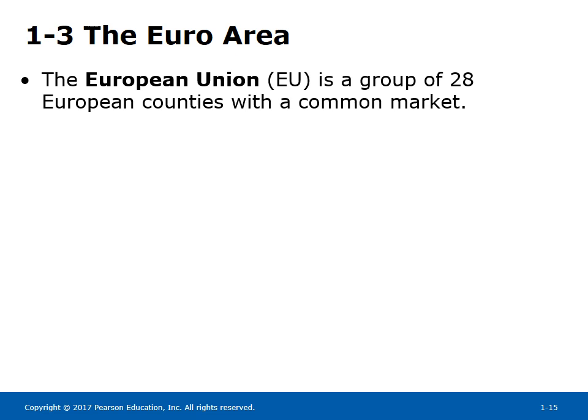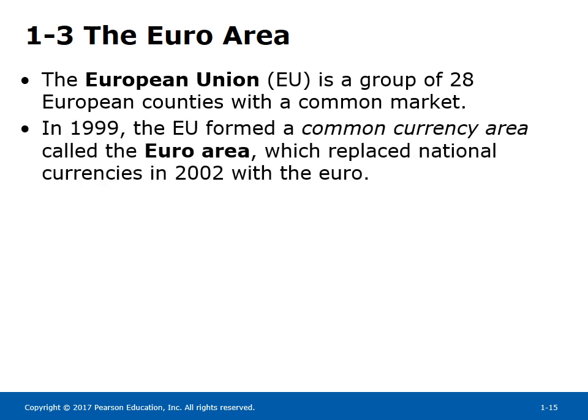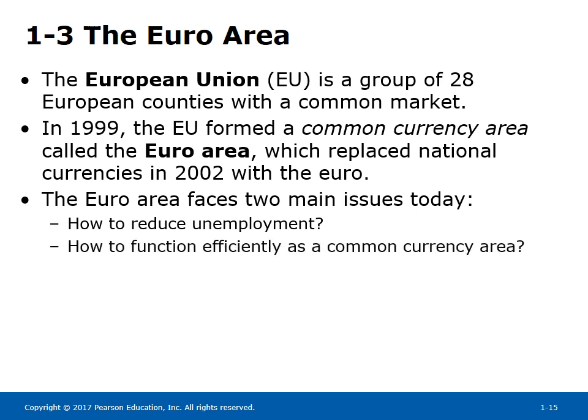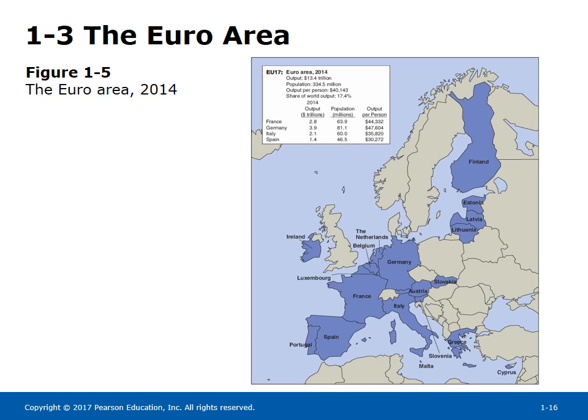The European Union is a group of 28 European countries with a common market. In 1999, the EU formed a common currency area called the Euro area, which replaced national currencies in 2002 with the Euro. The Euro area faces two main issues today: how to reduce unemployment, and how to function efficiently as a common currency area. A map of the Euro area with economic statistics is shown in Figure 1-5. For the Euro area as a whole, output in 2014 was $13.4 trillion, output per person was $40,143, and the share of world output was 17.4%.